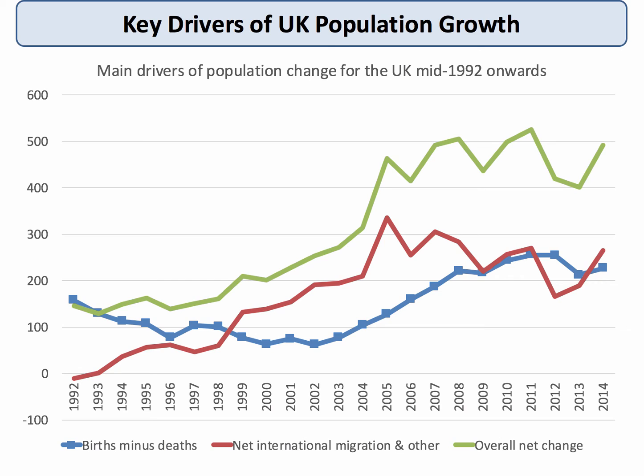I've put all that data on one chart. The blue line is the birth rate minus the death rate. The red line is net international migration — positive means people coming in. The green line is the overall net change, which sums those together. We're talking about a population growth of around 400,000 to 500,000 people a year, in pretty much every year since 2005. Over a 10-year period, that's an increase of 4.5 to 5 million in the resident UK population. This data is mid-year, so the last data point is mid-2014.